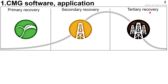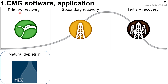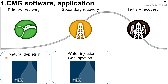Finally, tertiary recovery is the end stage of the oil life cycle. You can see the decline curve on the field here. We need to apply some EOR methods to produce more oil. For primary recovery you can use IMEX, mostly relying on natural depletion. For secondary recovery, water injection and gas injection can also be applied in IMEX, and will be introduced in this course.